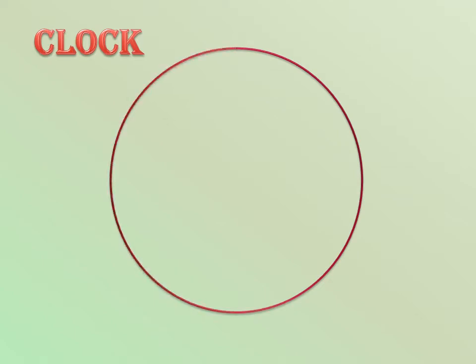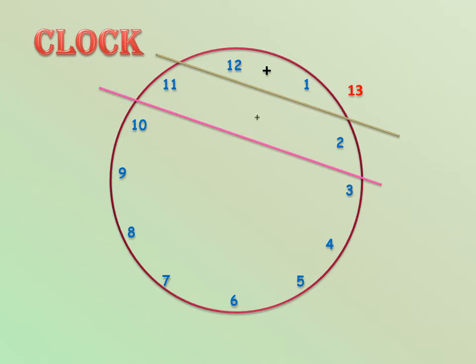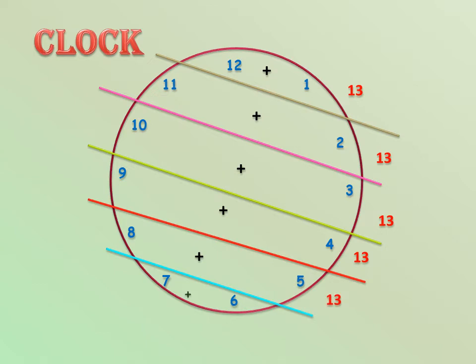If we try in the other way also, we will get 13 as the answer every time. Let us see. Here also we are doing addition only, but now we are not adding anything from outside - we are adding the numbers which are inside the clock itself. 12 plus 1 equals 13, 11 plus 2 equals 13, 10 plus 3 equals 13, 9 plus 4 equals 13, 8 plus 5 equals 13, 7 plus 6 equals 13.